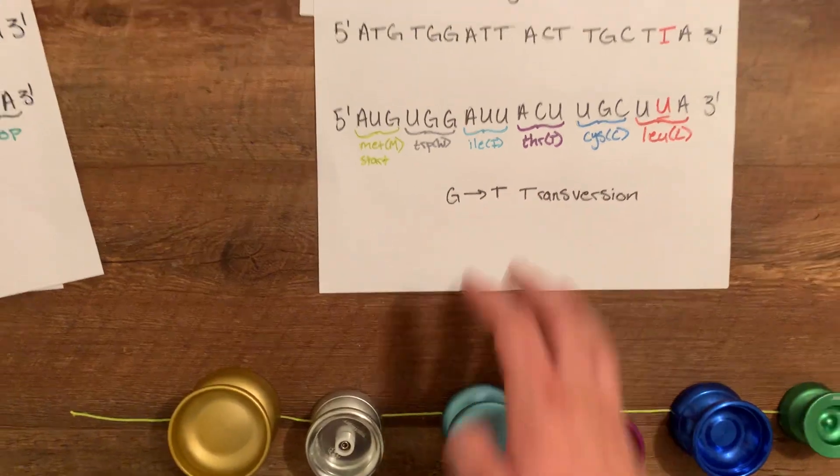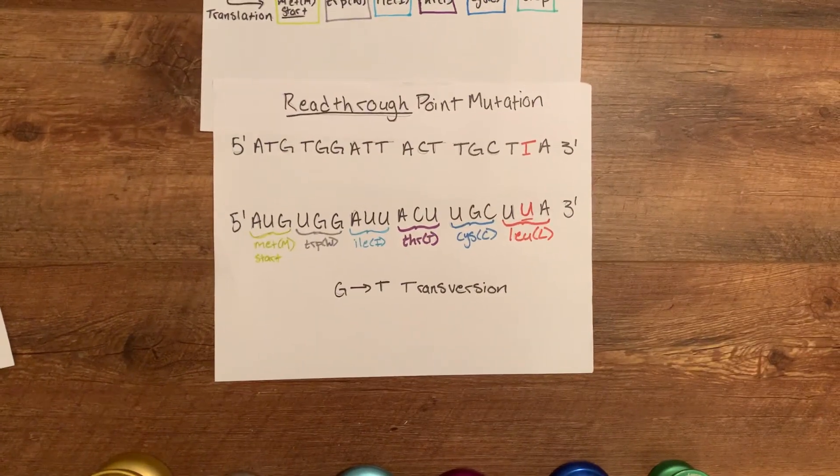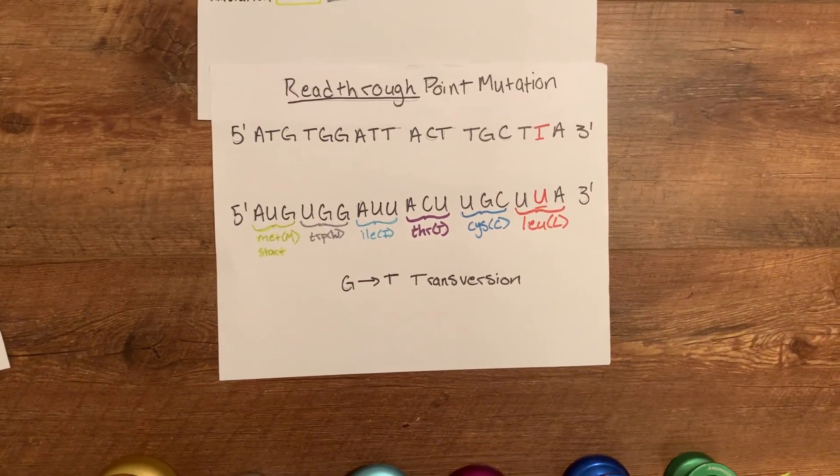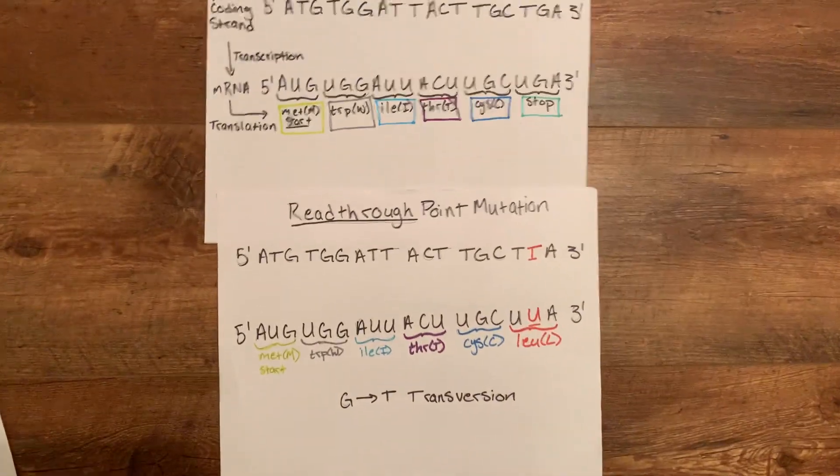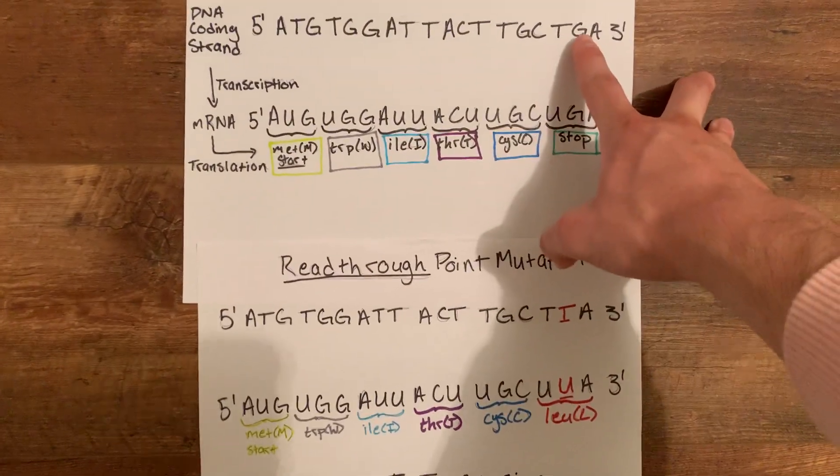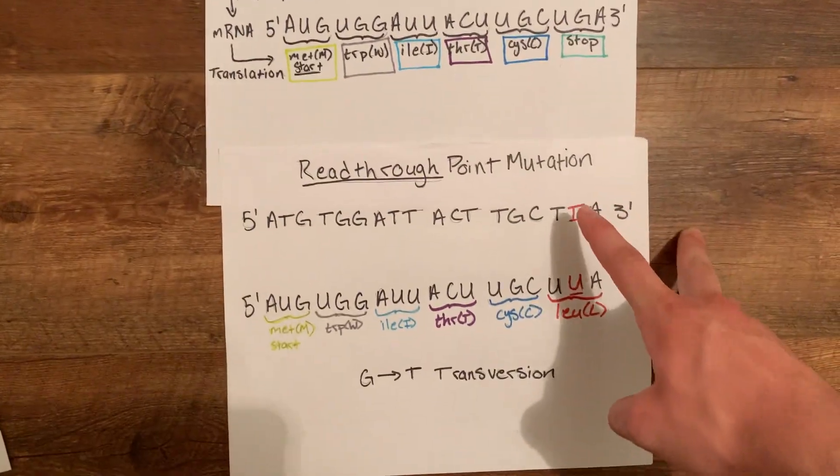Next we're going to finally look at read-through point mutation. This also again replaces a base with another base. So initially we have G and we replace it with a T.